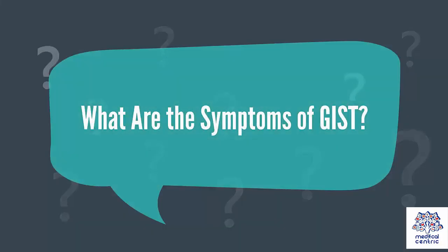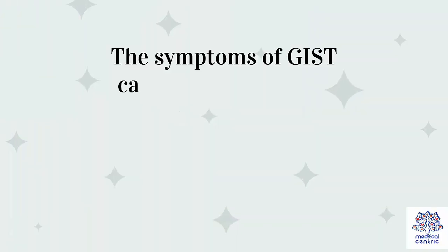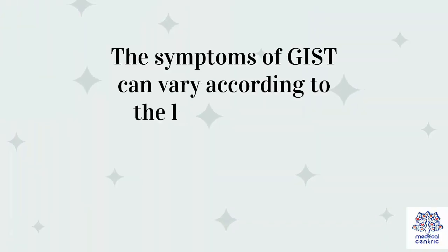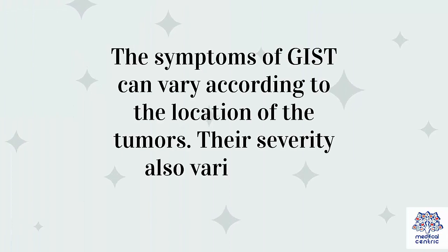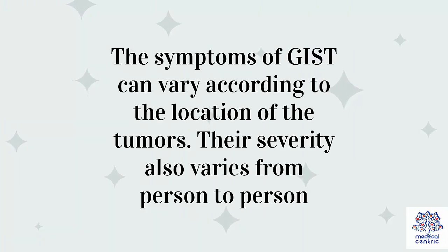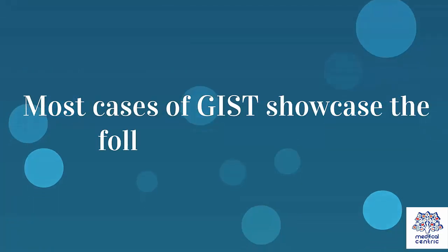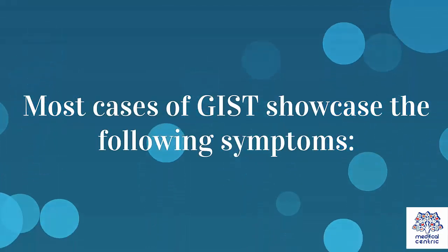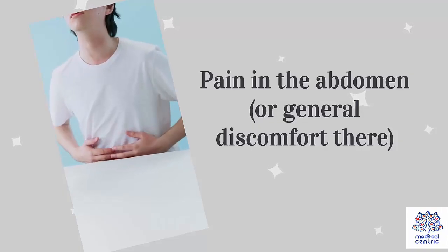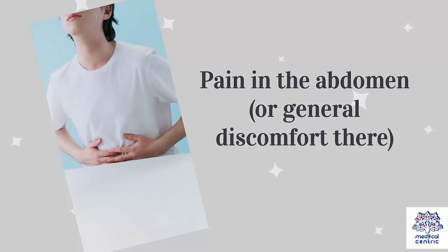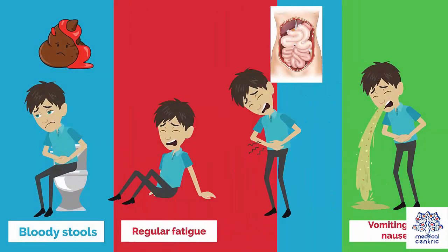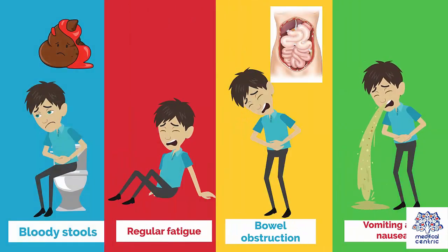What are the symptoms of GIST? The symptoms of GISTs can vary according to the location of the tumors. Their severity also varies from person to person. Most cases of GISTs showcase the following symptoms: pain in the abdomen or general discomfort there, bloody stools, regular fatigue, bowel obstruction, vomiting and nausea.